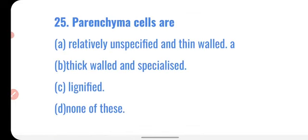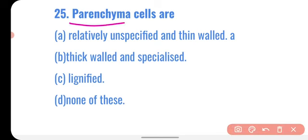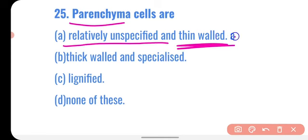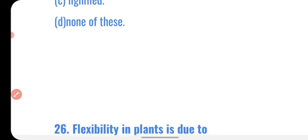Next question: parenchyma cells are relatively unspecialized and thin-walled — is this a correct characteristic feature? Yes, parenchyma cells are simple permanent tissue found in the plant body and they are relatively unspecialized and thin-walled. This is the correct characteristic feature. Correct option: option A.